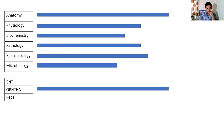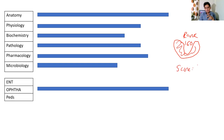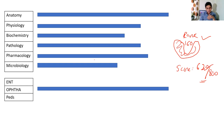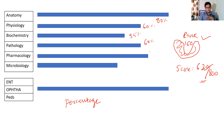Whenever we give a grand test, certain results come out. They will give you a rank - for example, rank 160 - then a score out of 800, and also a subject-wise performance analysis. There are two things they give: sometimes they give percentage accuracy in each subject, like anatomy 80%, physiology 60%, biochemistry 55%, methodology 60%. That is how they give the subject-wise performance.